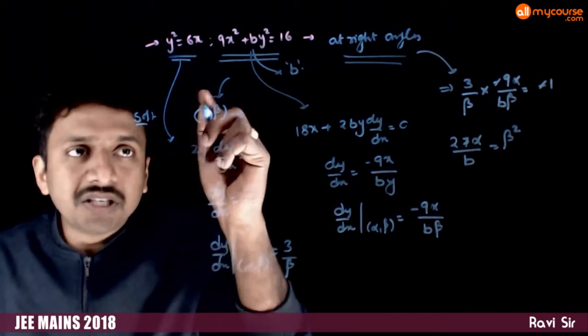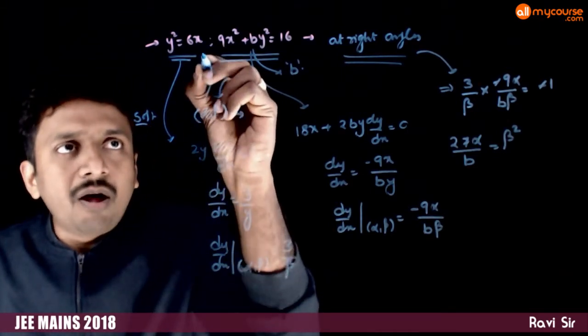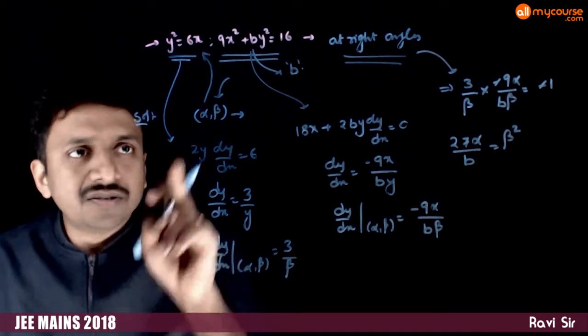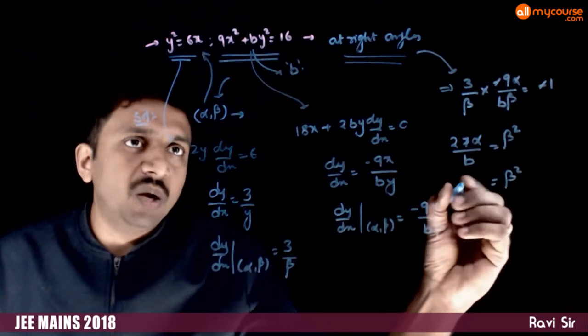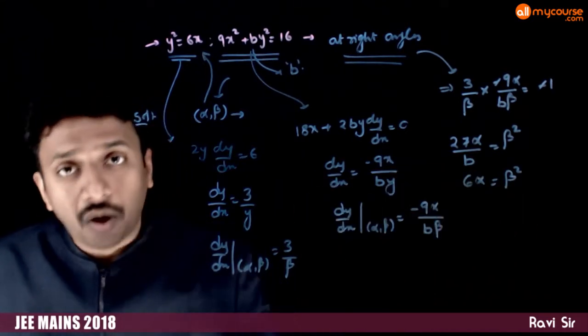But according to the question, alpha comma beta also lies on this curve. So this has to satisfy this equation also. Beta square has to be equal to 6 alpha also.